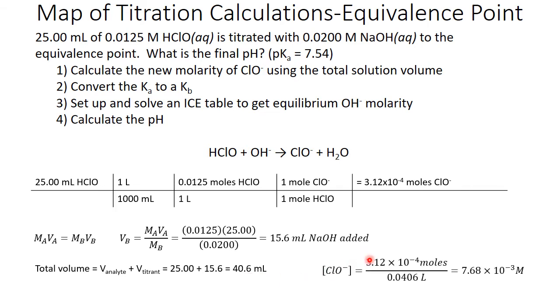If we divide our moles of ClO- by that volume, we find that the molarity of ClO- that we will use initially in our ice table is 7.68 times 10 to the minus third molar.